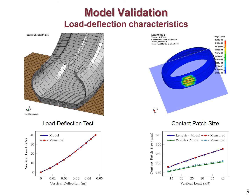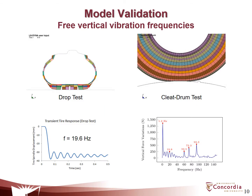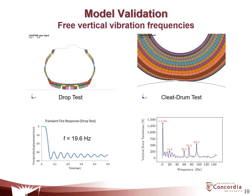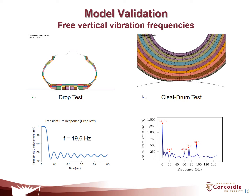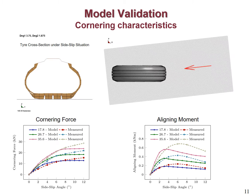The tire model is initially validated using experimental data in terms of load deflection characteristics and the contact patch size over a wide range of vertical loads. The fundamental frequency of the stationary tire is identified from the vibrational response of the tire spindle in a drop test simulation. The vertical mode frequency of the rolling tire at 50 km/h is obtained via fast Fourier transform analysis on the tire spindle reaction force response due to a cleat in a drum test simulation. The tire model is further validated in terms of the lateral force and aligning moment responses due to a range of constant side slip angles using experimental data for three different normal loads.